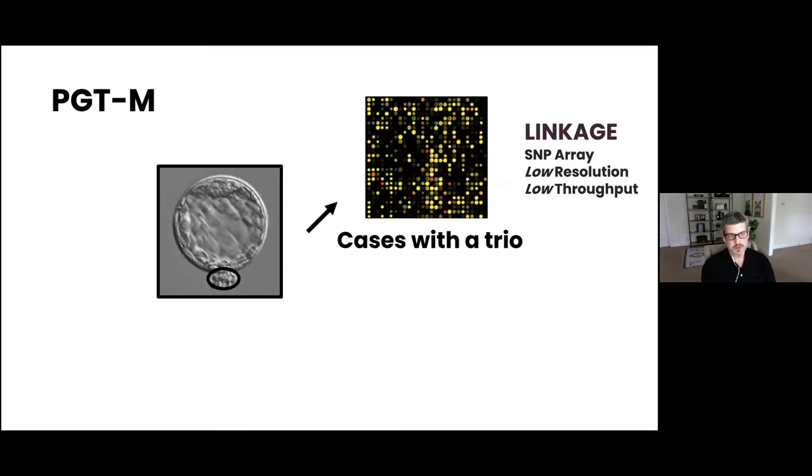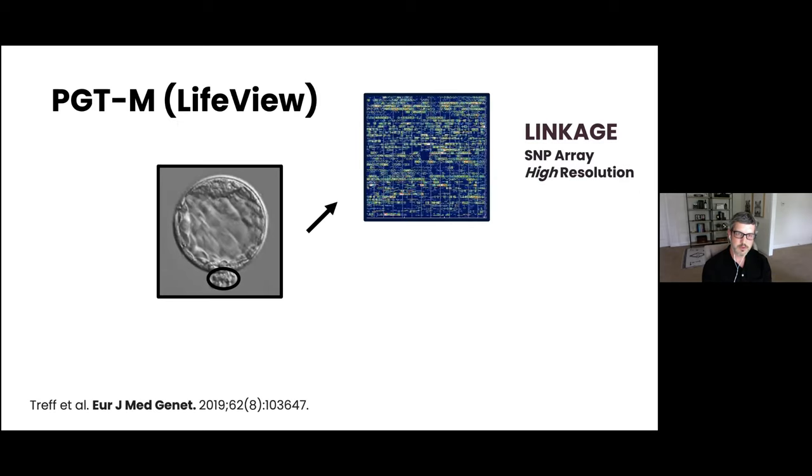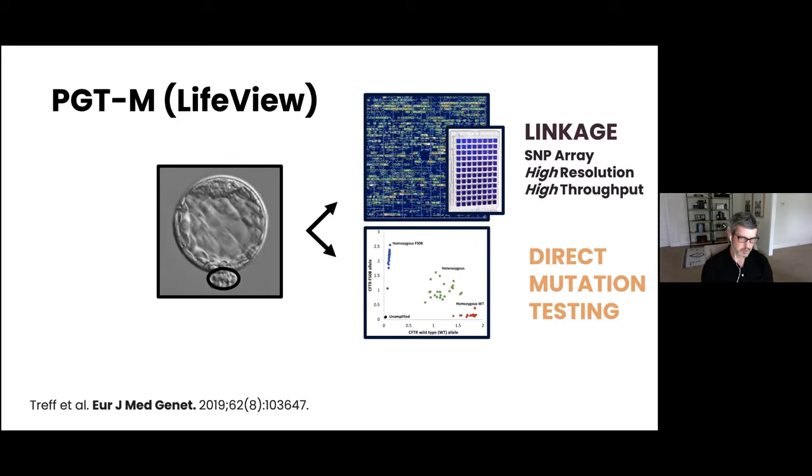With PGT-M, most laboratories are performing something called carrier mapping, which requires a trio. With LifeView PGT-M, we're able to directly measure mutations, and this allows us to accommodate cases where there might not be family members available or if there's a risk of recurrence of a de novo mutation. So again, we can accommodate more cases with the LifeView platform than can be done with other laboratories.